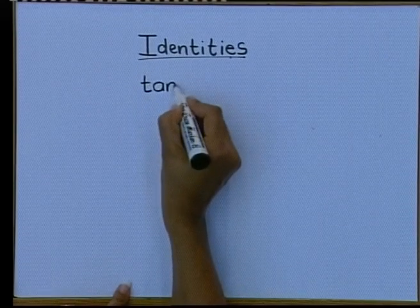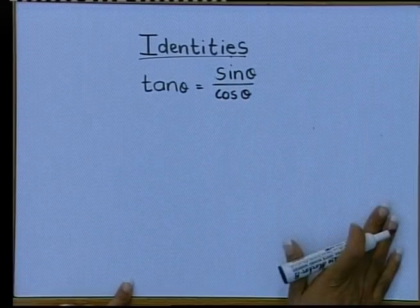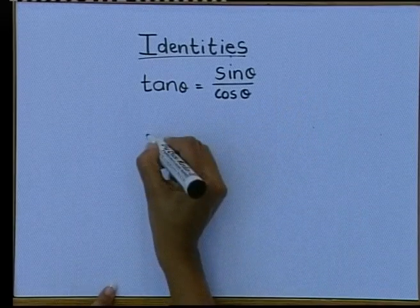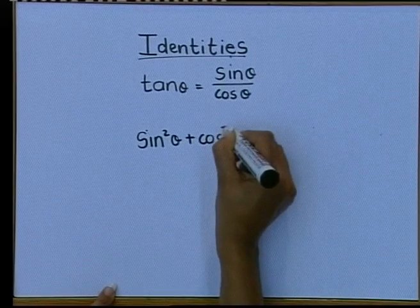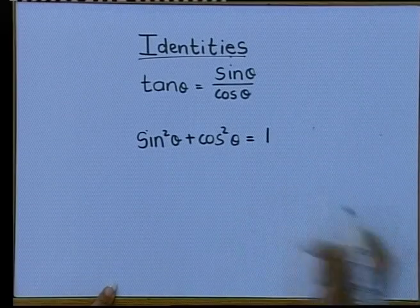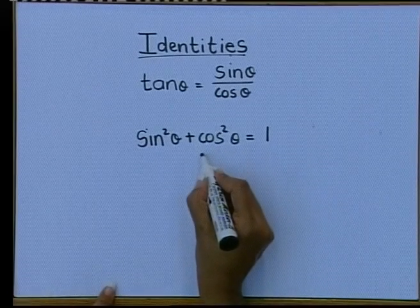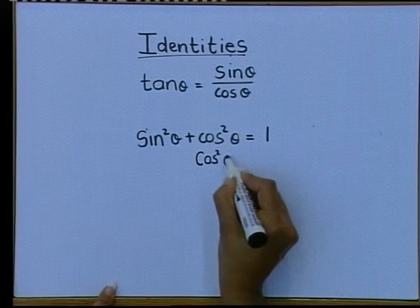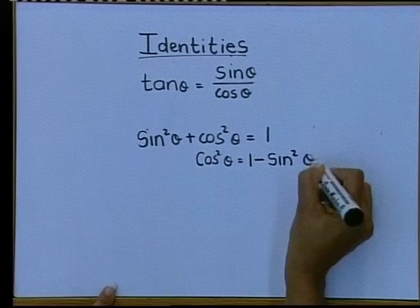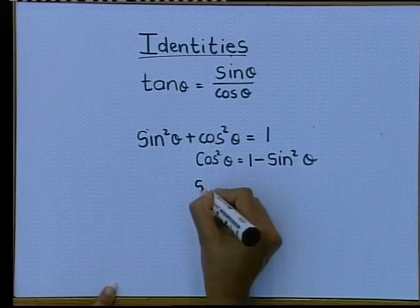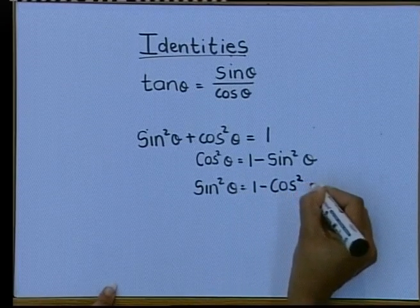When I see tan theta, I change it to sin theta over cos theta. That's your most important one. And then the second one is that sin squared theta plus cos squared theta is equal to 1. Remember quickly, if I just want cos squared theta alone, I take the sin squared across and it's 1 minus sin squared theta. And if I just want my sin squared theta alone, it is 1 minus cos squared theta.